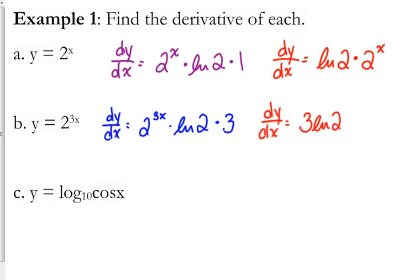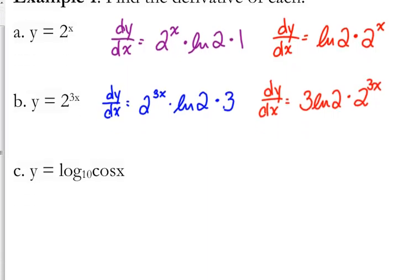Now let's say we throw a 3 in the exponent. Not really changing a whole lot, except the derivative of any exponential is itself times the natural log of the base. If the base were e, the natural log of e is 1. Times the derivative of the exponent — in this case, 3. So if we're rewriting this one, we would rewrite it as 3 times the natural log of 2 times 2 to the 3x.